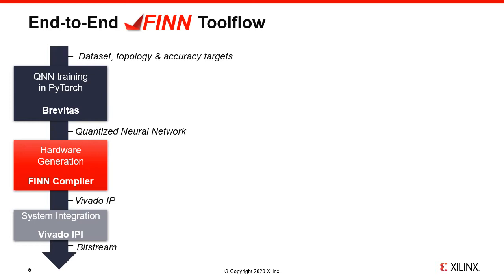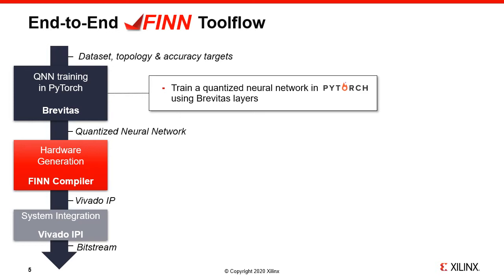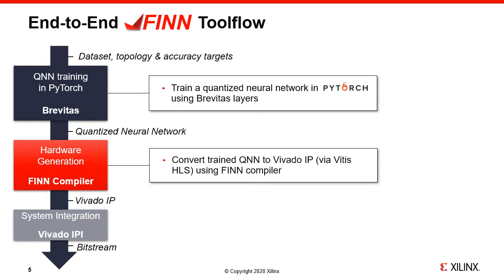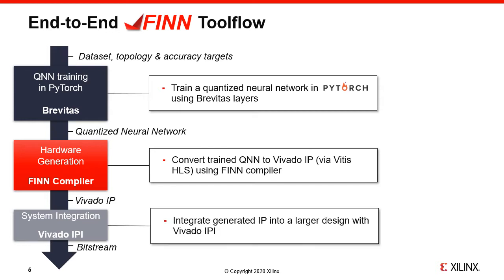This will involve first training a quantized neural network in PyTorch using Brevitas, then converting the quantized neural network to Vivado IP using the FINN compiler, and finally integrating the generated IP into a larger design to obtain a bitstream. This video will demonstrate the first two steps in a Jupyter notebook running in the FINN Docker environment, while the last step will be covered in the next video in the series.